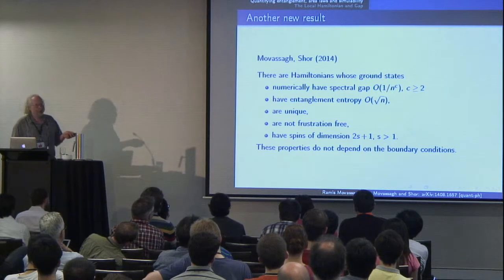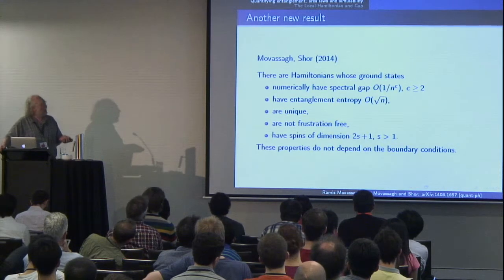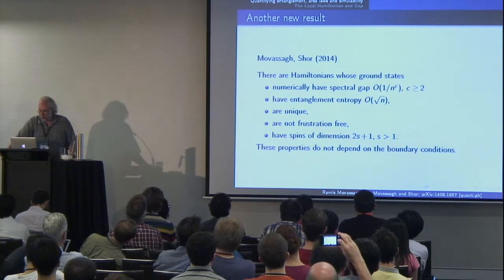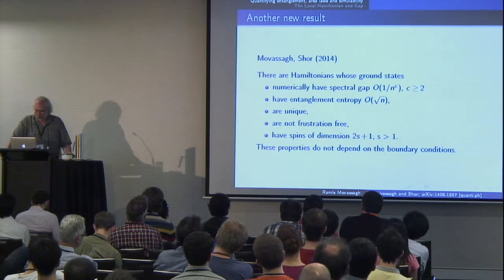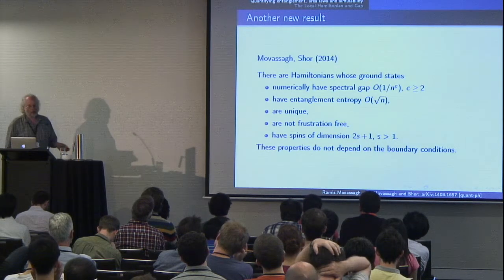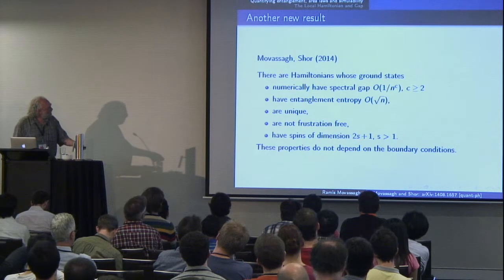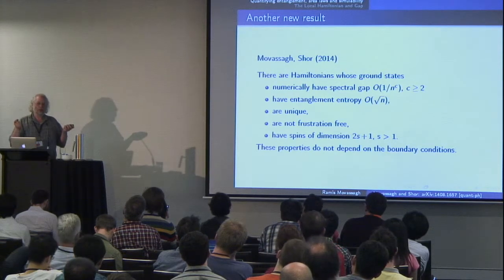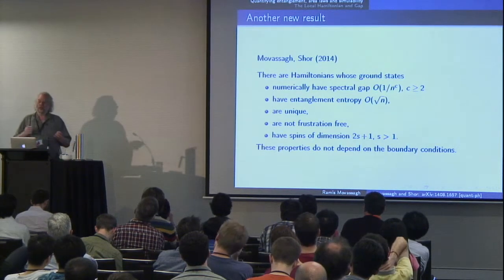There's another result which we haven't proved rigorously: there are Hamiltonians whose ground states probably have spectral gap 1/n^c, entanglement entropy O(√n), and the ground state is unique — so it's not a degenerate ground state case. They're not frustration-free; that's what you have to give up to get a unique ground state. They have spins of dimension 2s+1, and for all the previous things we need to specify boundary conditions on the spin chains, but for these you can use free boundary conditions.